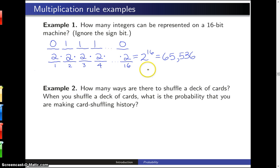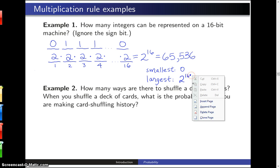The smallest of all of these integers is going to have all 0's in these digits. So that is a 0. The largest will have 1's in all 16 of the digits, and that will be 2 to the 16th minus 1.